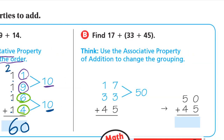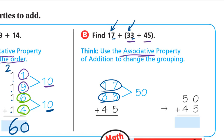Letter B: find 17 plus 33 plus 45. Use the associative property to change the grouping. Look at 17 and 33 — in the ones place, 7 plus 3 is 10, which gives 0 in the ones place and makes the problem easier. Add 17 plus 33 first: 7 plus 3 is 10, write 0 carry 1; 1 plus 1 is 2, plus 3 is 5 — so 17 plus 33 is 50. Then add 45: 0 plus 5 is 5, and 5 plus 4 is 9. The answer is 95.